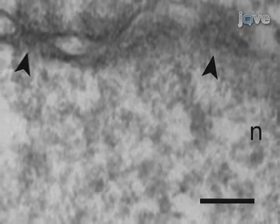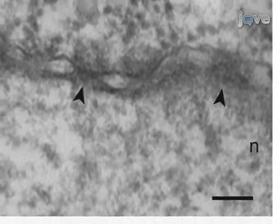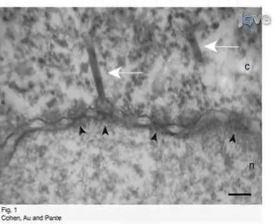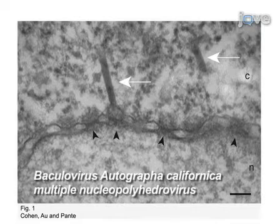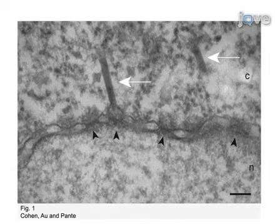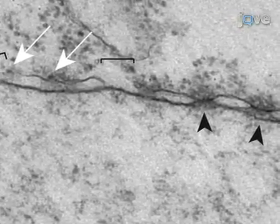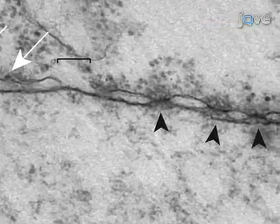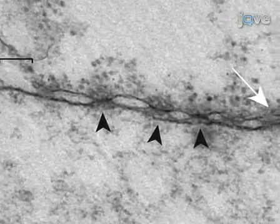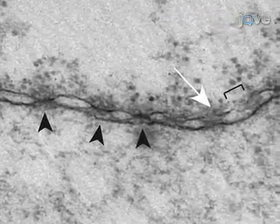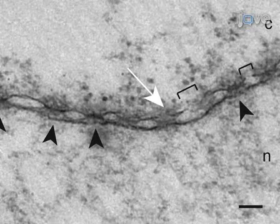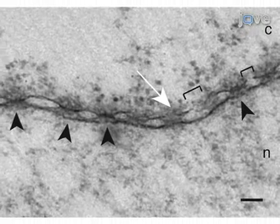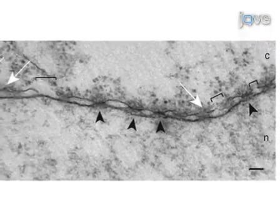This representative result shows a nuclear envelope cross-section with adjacent cytoplasm and nucleus from a Xenopus oocyte that has been injected with capsids of the baculovirus AcMNPV. Arrowheads point to NPCs, and a capsid docking at the cytoplasmic face of an NPC is indicated by a white arrow. In contrast, this figure shows a nuclear envelope cross-section from a Xenopus oocyte injected with the parvovirus of mice, MVM. Using this technique, we have found that MVM induces disruptions of the nuclear envelope. Brackets indicate breaks in the nuclear envelope, arrowheads point to NPCs, and putative MVM capsids associated with the nuclear envelope are indicated by white arrows.